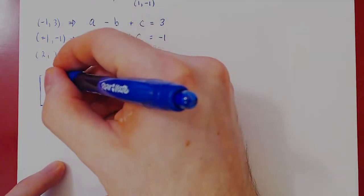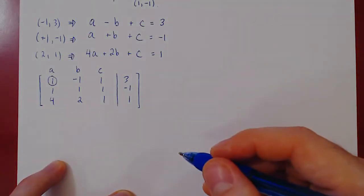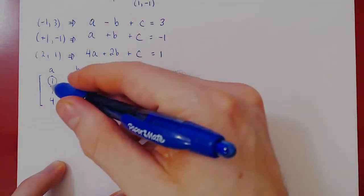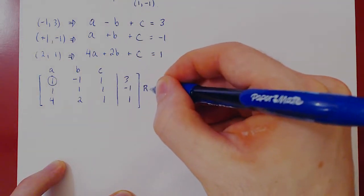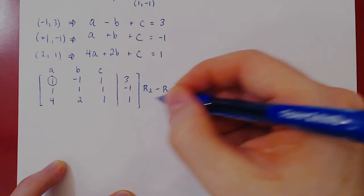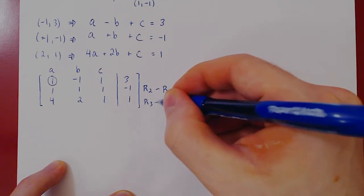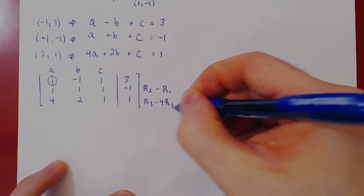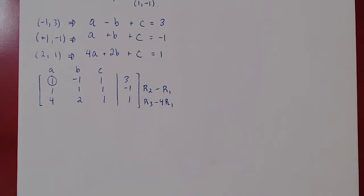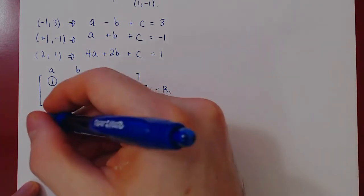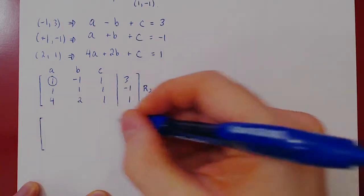As we have just said, we already have our leading one in the left most column and top row. So we'll kill the entries below. Row two minus row one. Row three minus four row one. As always, we recopy the rows that we are not changing. This is only the first one.